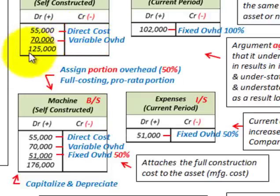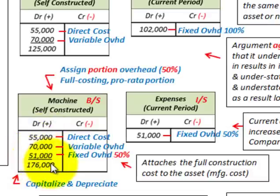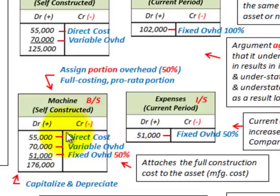You can see that with no fixed overhead you get a lower machine cost of $125,000, compared to $176,000 when assigning a portion of overhead. When assigning a portion, we capitalize the machine at a greater amount, so as we depreciate it we'll have a greater depreciation expense. The argument is that it gives a more accurate cost and a more accurate future allocation of costs in future years.